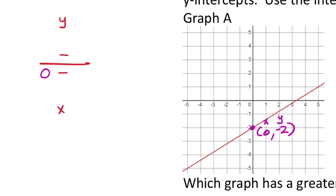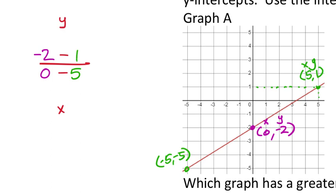I need another ordered pair. I can see one at (negative 5, negative 5) and one in the top right at (5, 1). I'll use (5, 1) because they're positives—you'd get the same slope with the other point. So x = 5 goes on the bottom and y = 1 goes on top. In the calculator: (negative 2 minus 1) divided by (0 minus 5) gives 0.6.